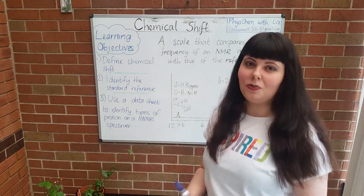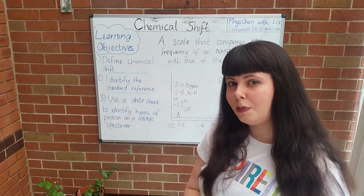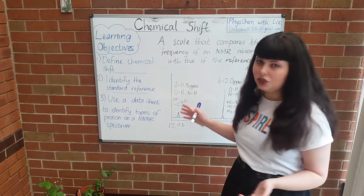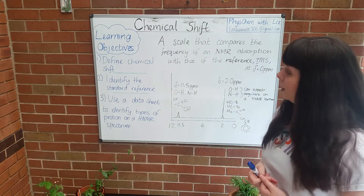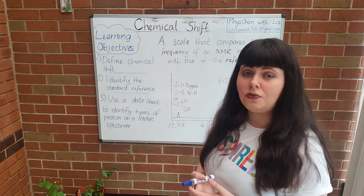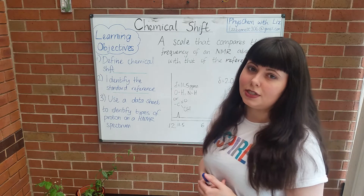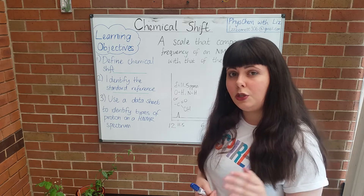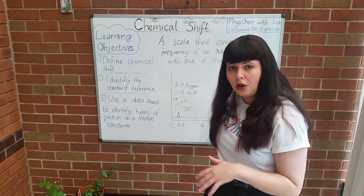Hi everyone, welcome to FISCHEM with Liz. I'm Liz and today we're going to look at one of the basics of NMR spectroscopy, which is chemical shift. In this short video tutorial we are going to define chemical shift in words — what is it? We're going to identify the chemical used as a reference against which all other things are measured, and also use a data sheet to identify the different kinds of proton which produce different signals at different chemical shifts on the spectrum.